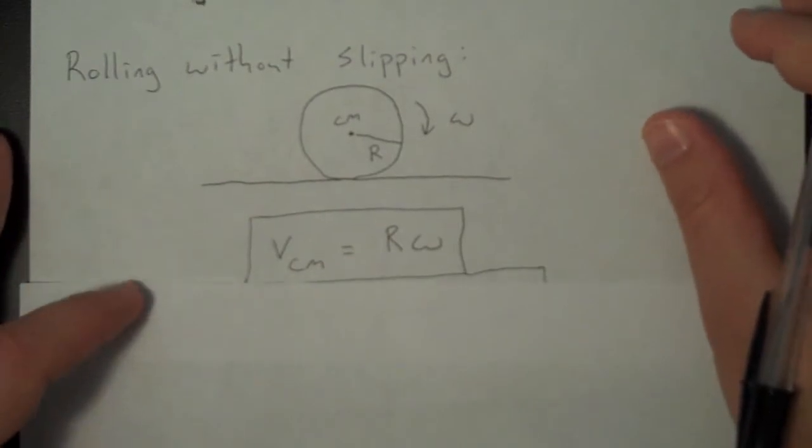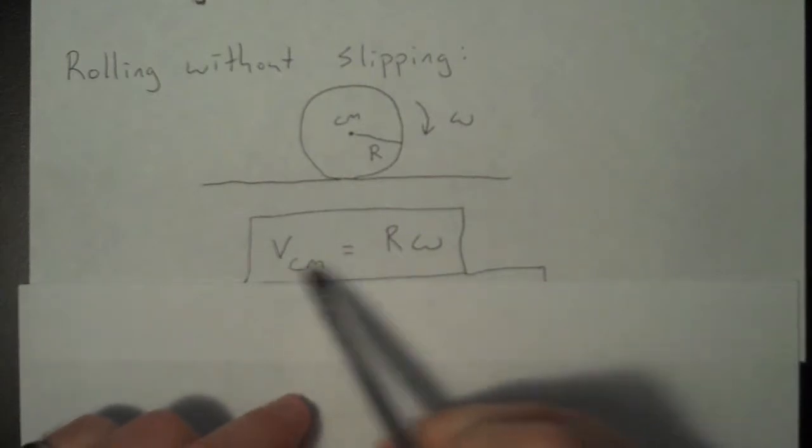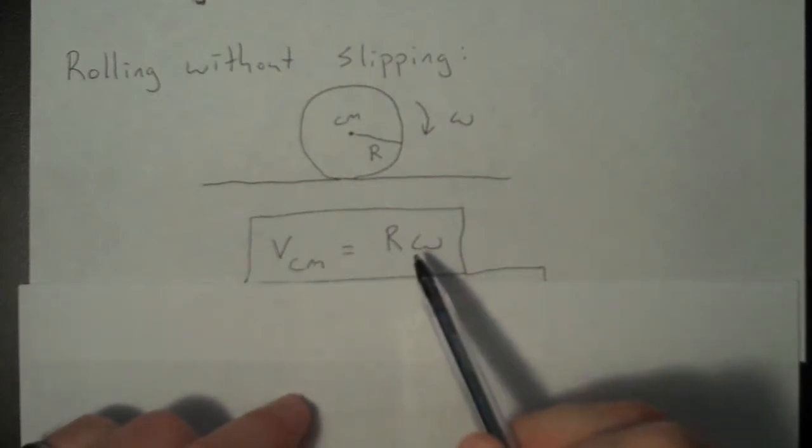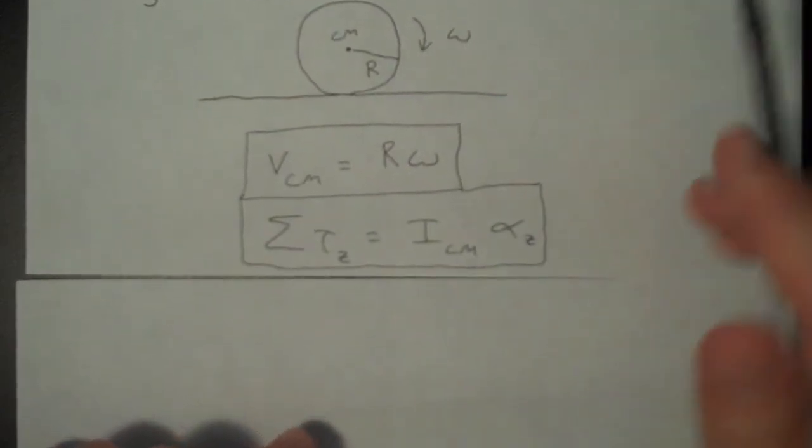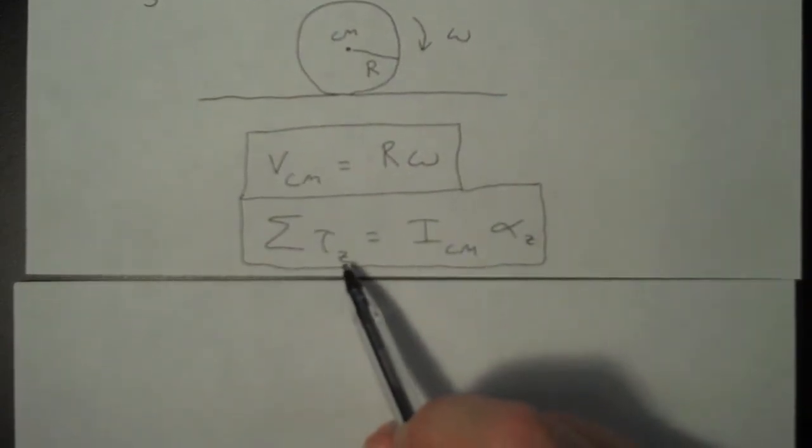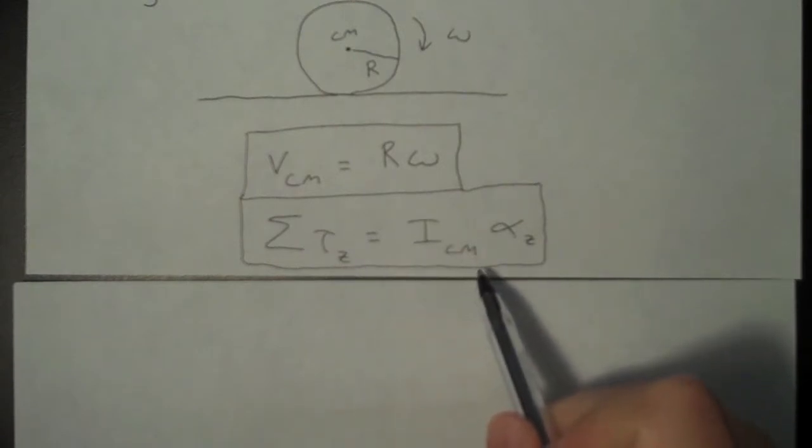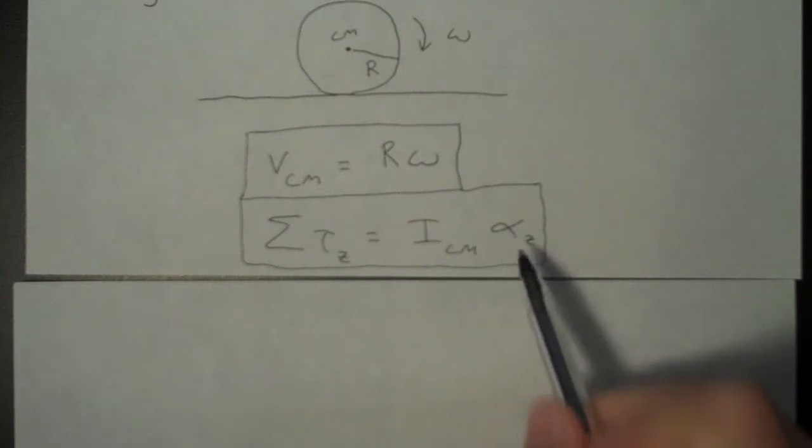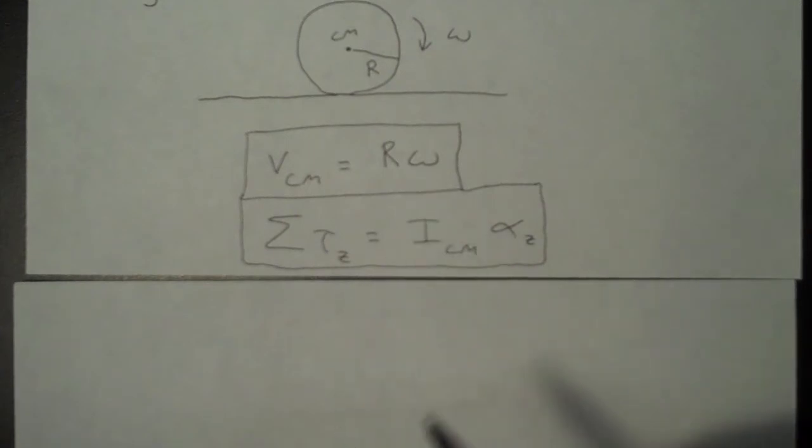The connection between the angular speed and the linear speed, the speed going from one point to another, is this. We've seen this before, so it's more of just a reminder. And then also, the torque around that center of mass, the sum of the torques, is equal to the moment of inertia relative to the center of mass times the angular acceleration. So these two, we've basically seen before.